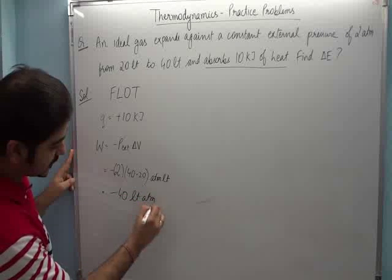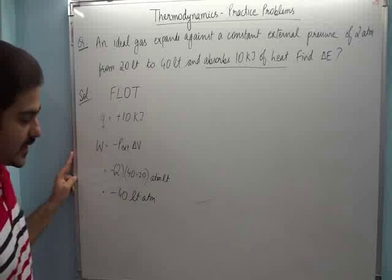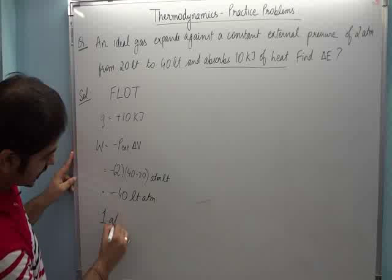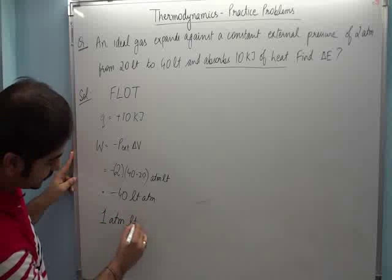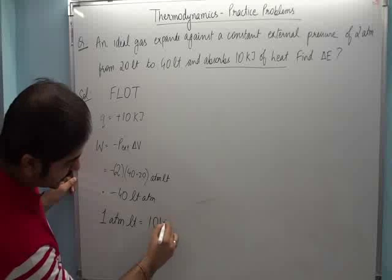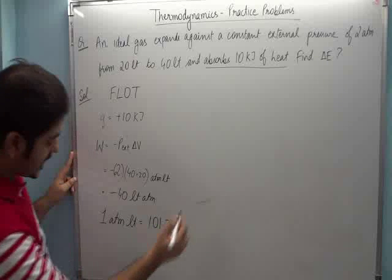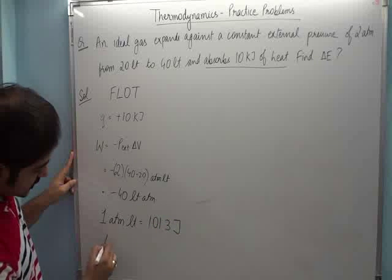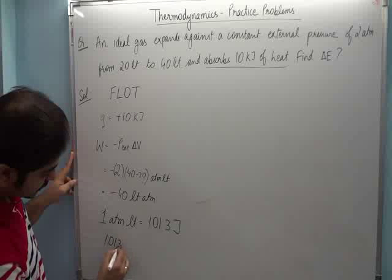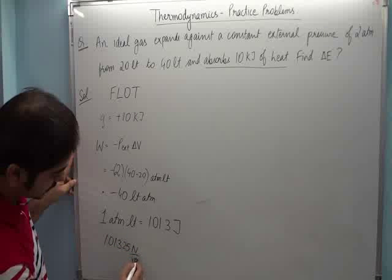But we've seen in previous videos how to convert this: one liter-atmosphere equals 101.3 joules. We get this because one atmosphere is 101,325 newton per meter squared.